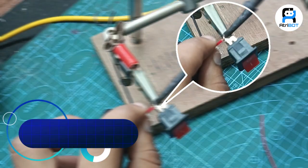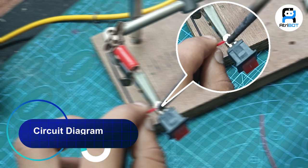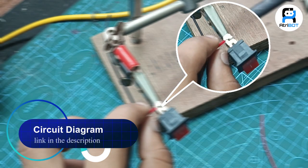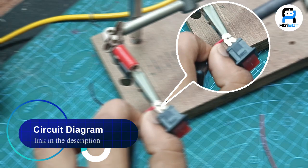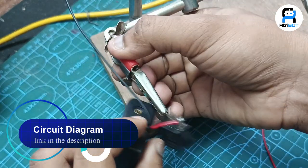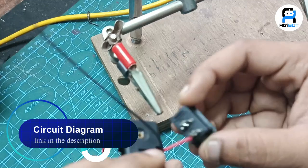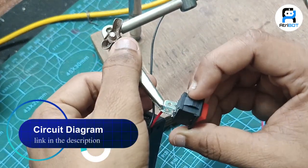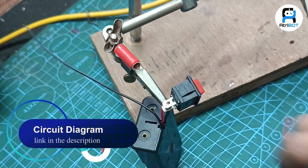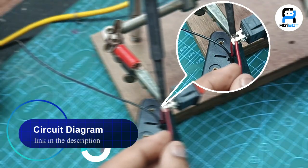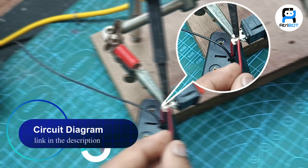Solder the red wire to one terminal of the SPST switch. Also connect the other terminal of the SPST switch by soldering it with the output red wire.